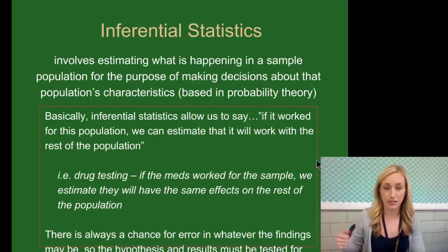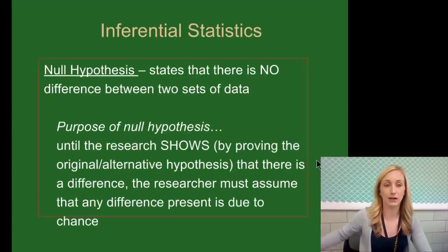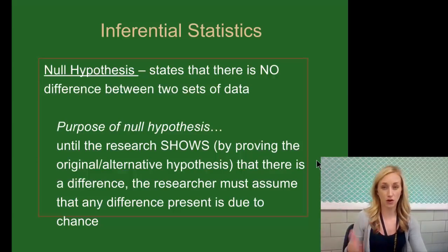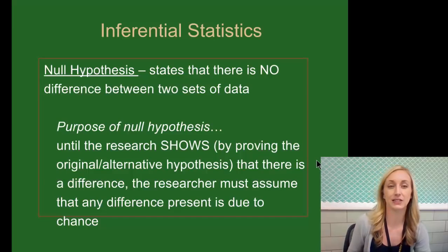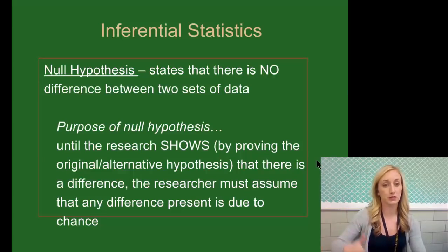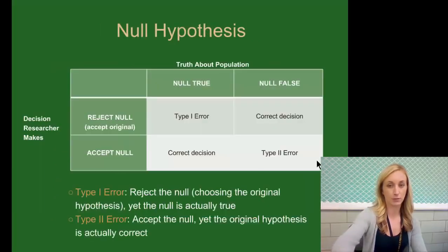There's always a chance for error in findings, so the hypothesis and results must be tested for a null hypothesis — which is just the opposite or the lack of your hypothesis. It states that there is no difference between two sets of data. The purpose of a null hypothesis is that until the research proves the original alternative hypothesis, the researcher must assume any difference present is due to chance. It's like innocent until proven guilty — you are wrong until you prove yourself right.